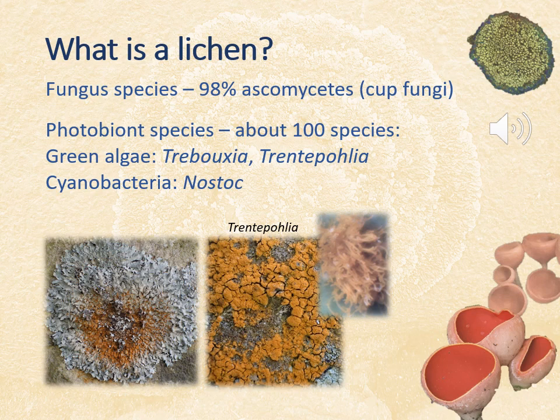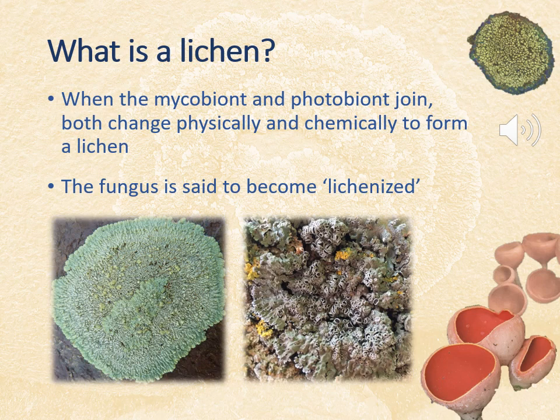Other species of photobiont are cyanobacteria, which are most commonly represented by the genus Nostoc. When the fungus and partner join, both change physically and chemically to form a lichen — the fungus is said to be lichenised. Although lichens are made up of more than one organism, their species names are based on the fungus and not the photobiont.